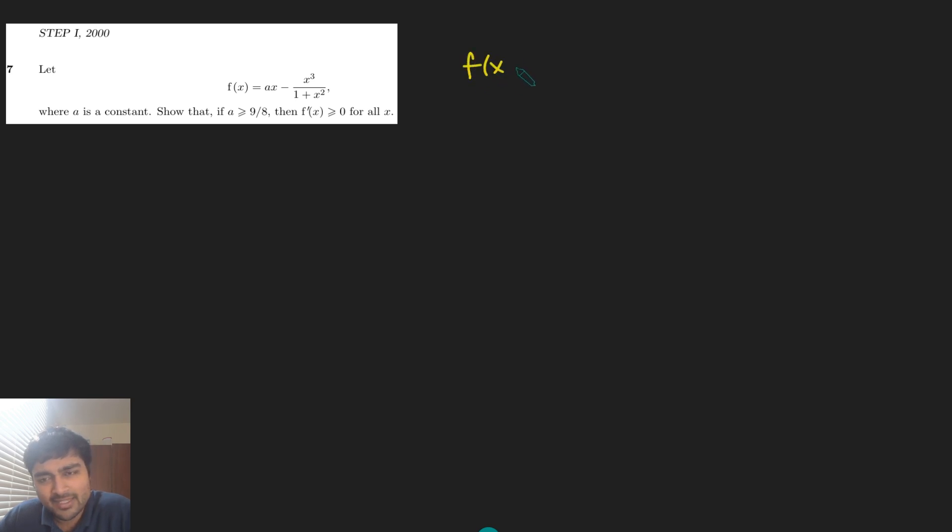So f(x) is ax minus x cubed, but I can write this as x squared times x over x squared plus 1. And I want to simplify this fraction if I can. So ax minus, let's just turn this to an x squared plus 1 times x. But of course, then I need to subtract off an x. So of course, if you expand this, you can verify this still equals x cubed.